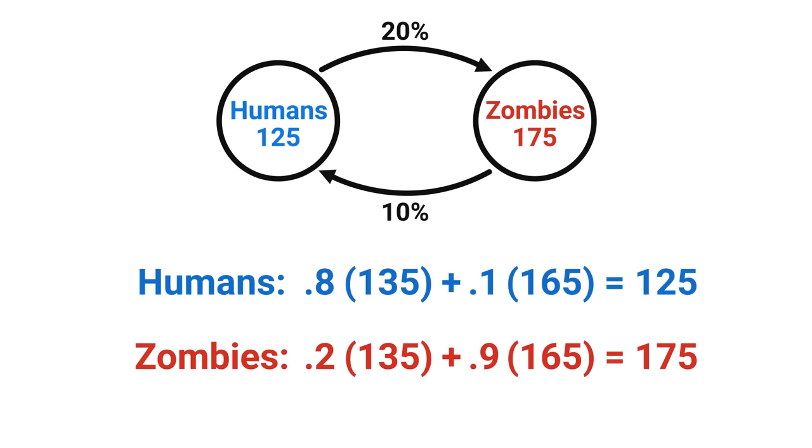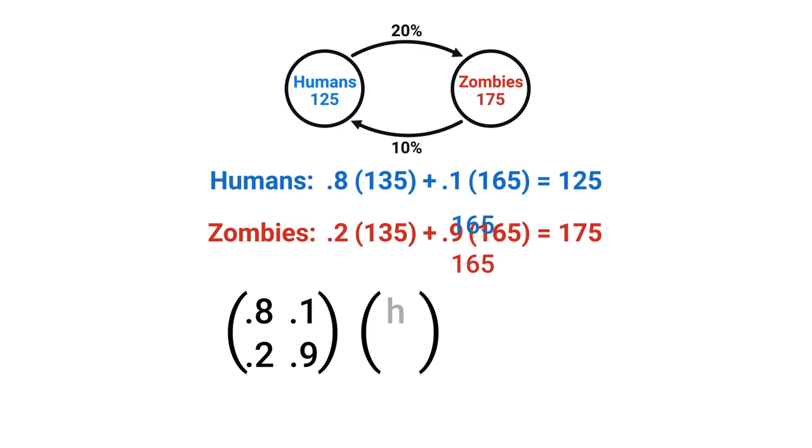Well what we have here is some linear equations that can be represented as a matrix of those percentages which don't change. This is multiplied by the inputs H and Z or the current population of humans and zombies at any time and all this equals the populations after that given hour. This is called a Markov matrix by the way since its columns sum to one and it has no negative values.